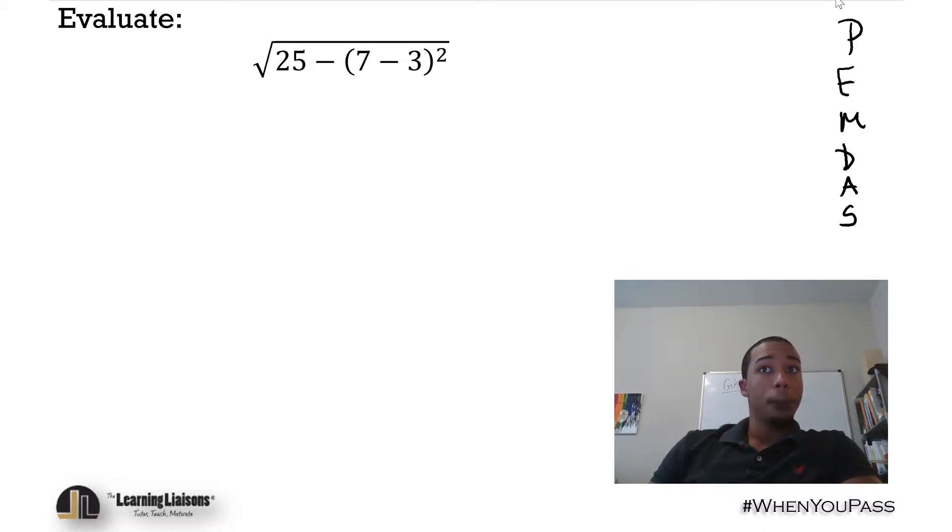We have a parenthesis right here, and notice the square root symbol. The square root symbol basically envelops this entire thing in a parenthesis because we're taking the square root of this whole thing. So it's like saying that it's implied that that's a parenthesis. Another way to think about this: taking the square root is like raising to the one-half power, so it'd be like saying 25 minus 7 minus 3 squared to the power of one-half.